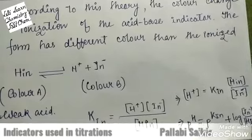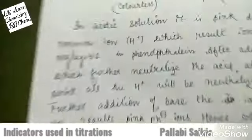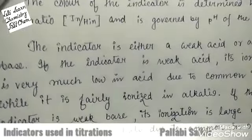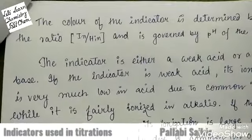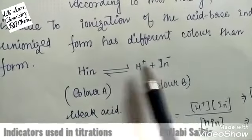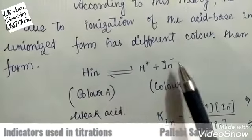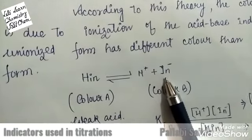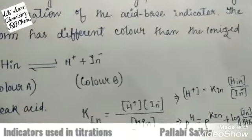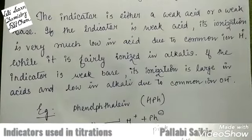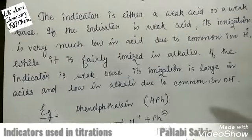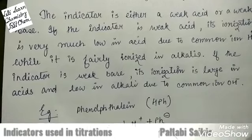Hence, pH = pKin + log([In⁻]/[HIn]). From here we can say that the color of the indicator is determined by the ratio [In⁻]/[HIn] and is governed by the pH of the solution. The ionized form has one color and the unionized form has another color, and the ratio of ionized form to unionized form determines the color, which is governed by the pH of the solution. The indicator is either a weak acid or weak base.